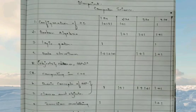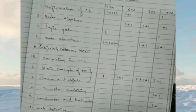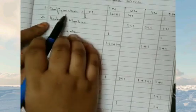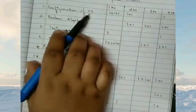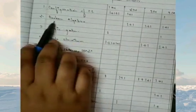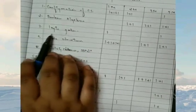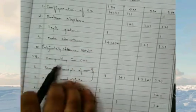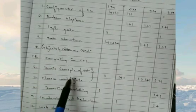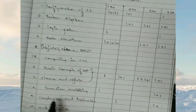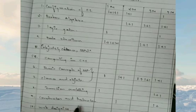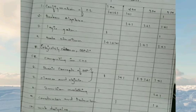So in computer science there are total 10 chapters: configuration of computer system, boolean algebra, logic gates, data structure, computing in C++, basic concepts of OOPS, classes and objects, function overloading, constructor and destructor, then last is web designing.